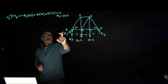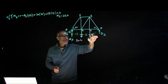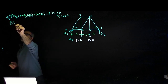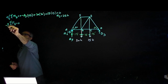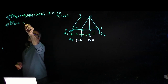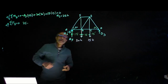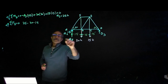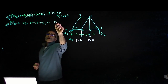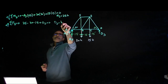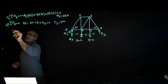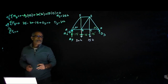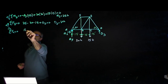AX cannot take a moment about this point because it's in the same line of action. So now I'm going to do summation of FY to calculate DY. I have AY which came out to 25 kips, minus 30, minus 15 — those are going in the down direction — plus DY equals 0. DY comes out to 20 kips. Summation FX equals 0, and there's nothing there, so AX equals 0.